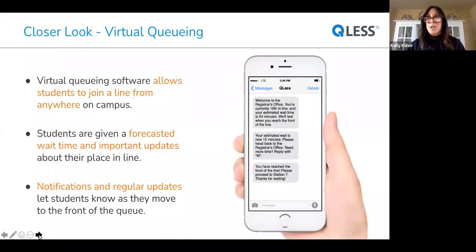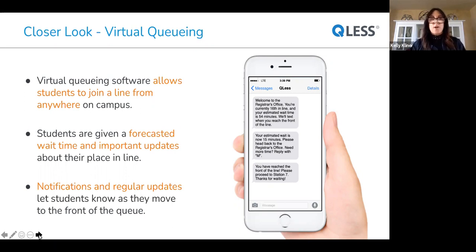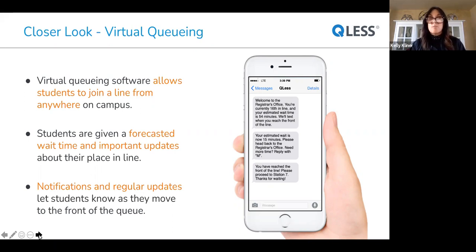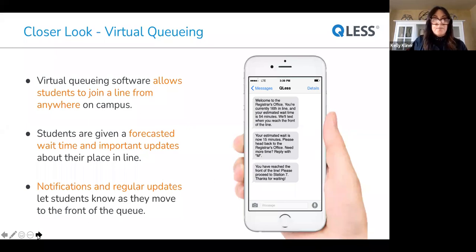Let's talk about virtual queuing. Some of you may or may not be familiar with what a platform like ours does. Virtual queuing software allows students to join a line from anywhere on campus. Students are given a customized forecasted wait time and important updates about their place in line. They get notifications and regular updates as they move to the front of a queue. This is an example of some of the notifications a student may receive while waiting in queue. QLIS is also 100% web-based — we are in the cloud, hosted on Amazon Web Services.